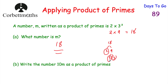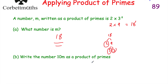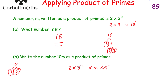The next part says to write 10m as a product of primes. 10m means 10 times m, so that's 10 × 18 = 180. There's a shortcut: m = 2 × 3², and 10 = 2 × 5 as a product of primes. So 10m = 2 × 3² × 2 × 5. Writing in index form: 2 × 2 is 2², so 10m = 2² × 3² × 5.